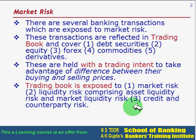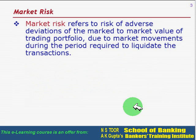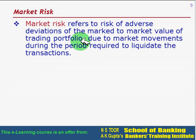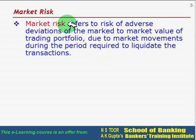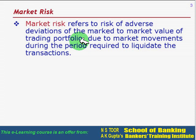What is meant by market risk? Market risk means the risk of adverse deviations of the market value of the trading portfolio. This happens due to market movements during the period required to liquidate the transactions. The bank is holding investments in bonds or gold, and there can be adverse deviation in the market value of these assets because of market movements during the liquidation period.